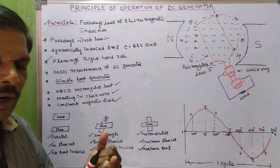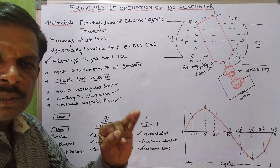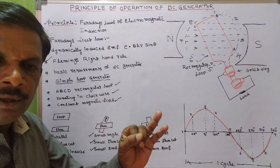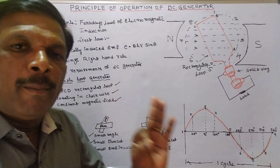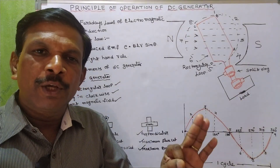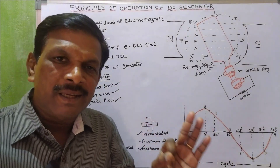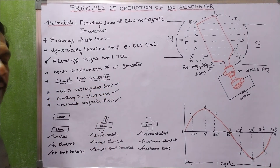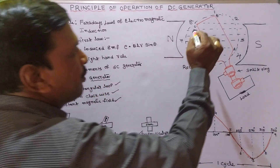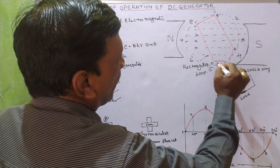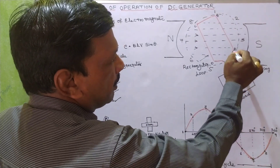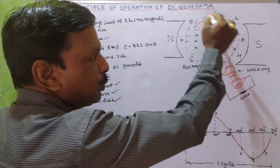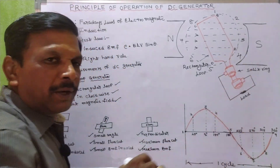The basic requirements of a DC generator are: first, a conductor system; second, motion of the conductor; and third, a magnetic field. These three are the basic requirements. Now, coming to the simple loop generator — here we take a rectangular simple loop ABCD.